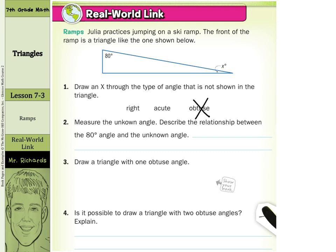Measure the unknown angle. Describe the relationship between the 80 degree angle and the unknown angle. Well if we had our protractors out you would measure that angle X is just 10 degrees. Well what is the relationship between 80 and 10? Well if we were to add 80 plus 10 we end up with 90 degrees, which means that the angles are actually complementary.